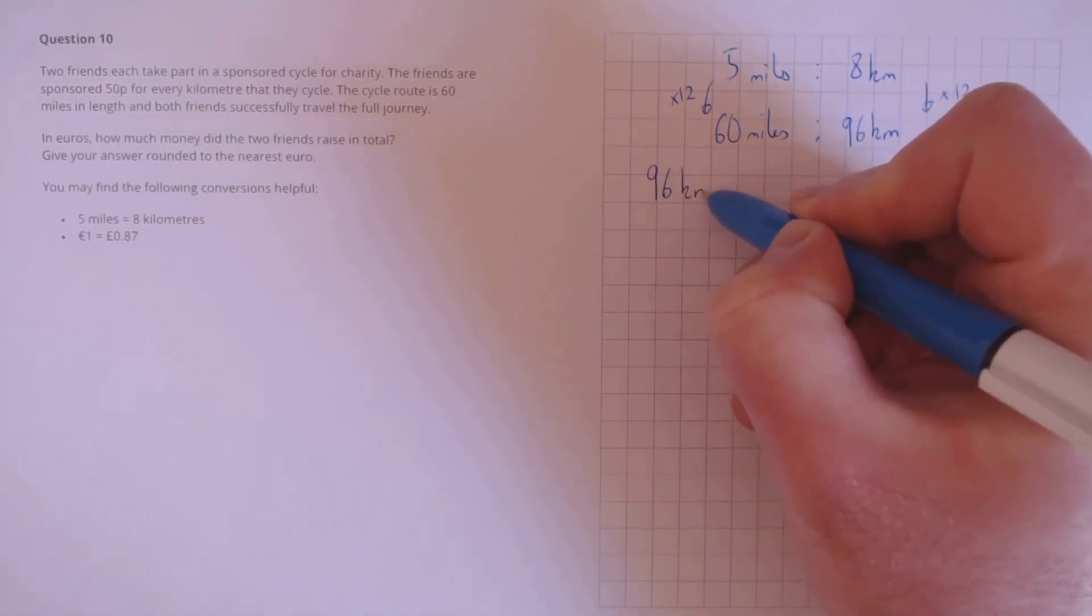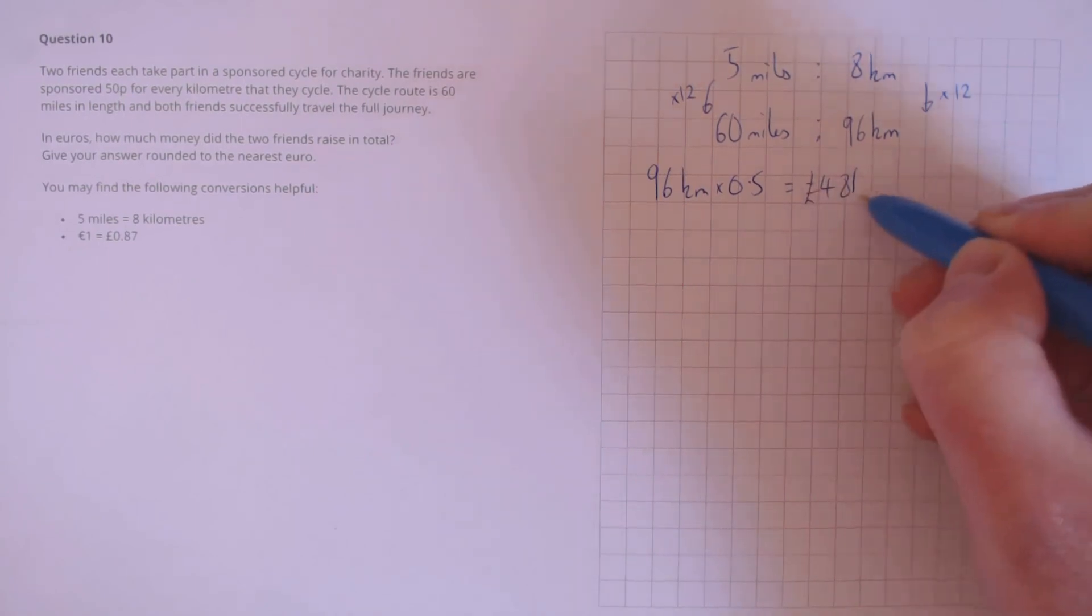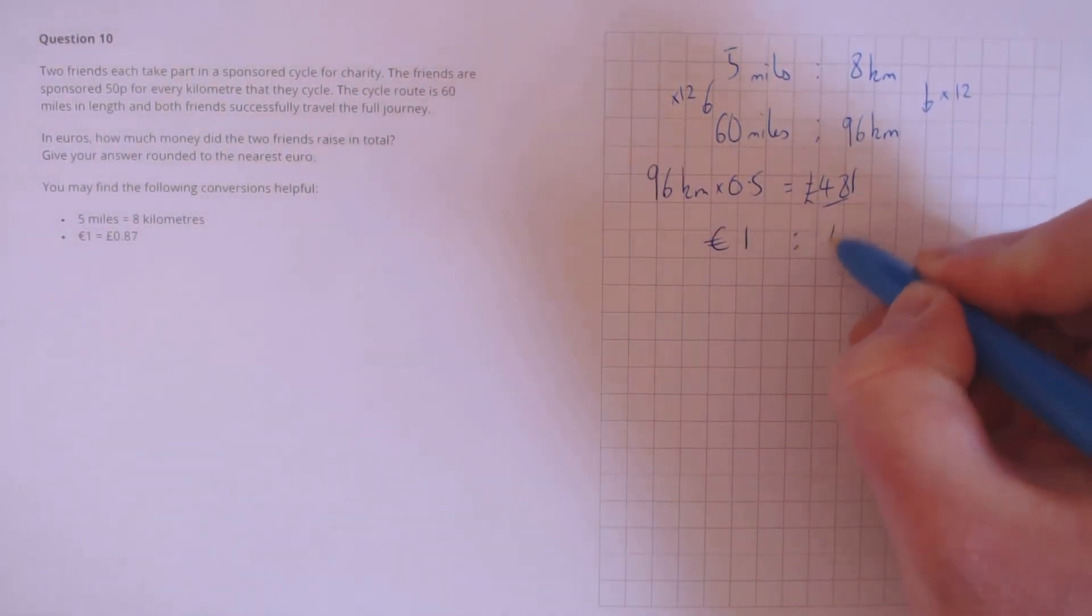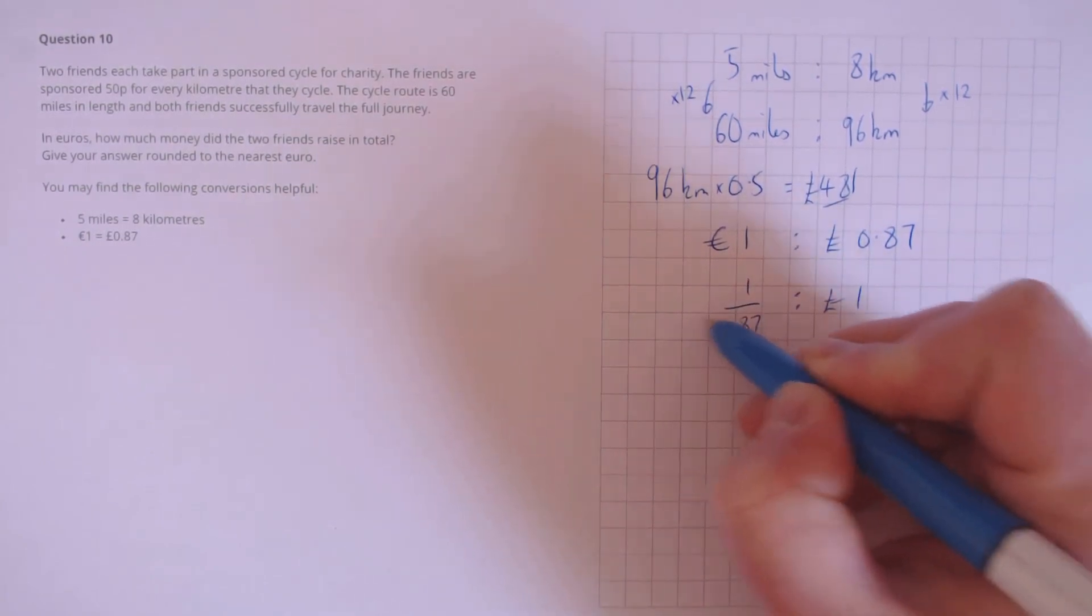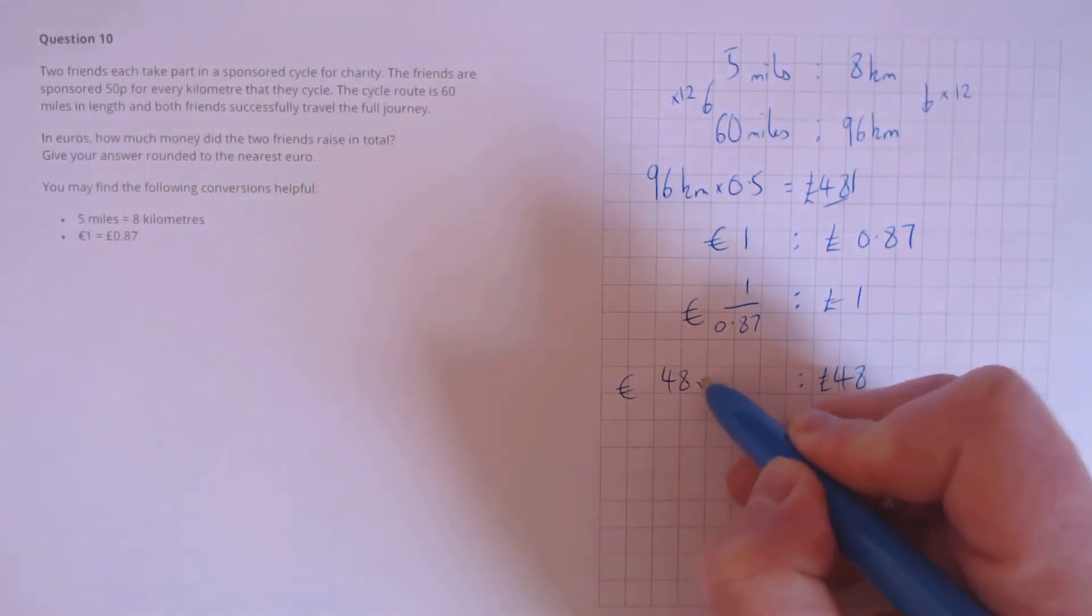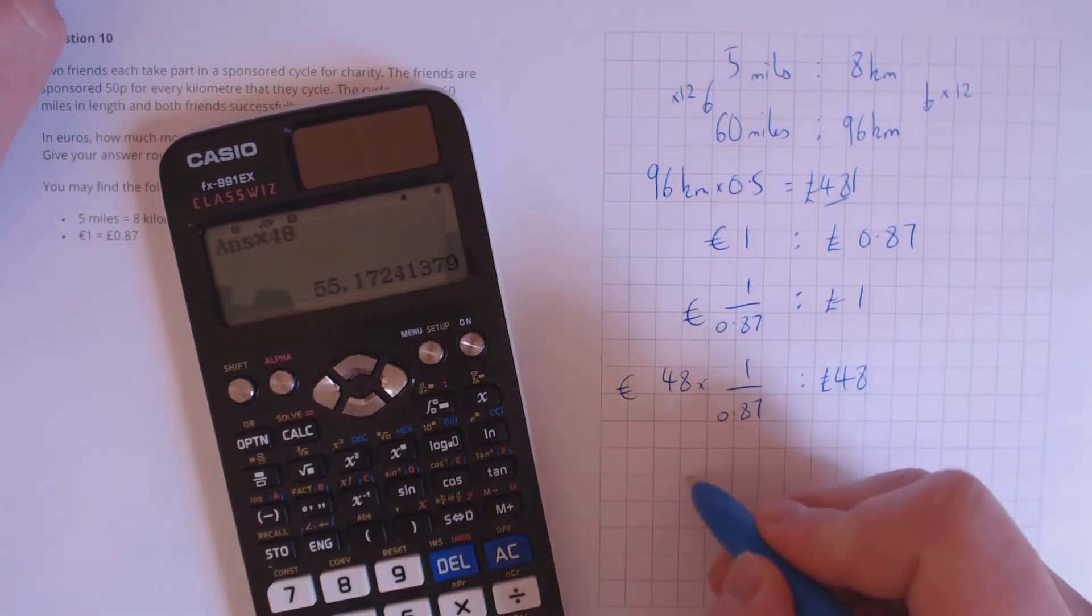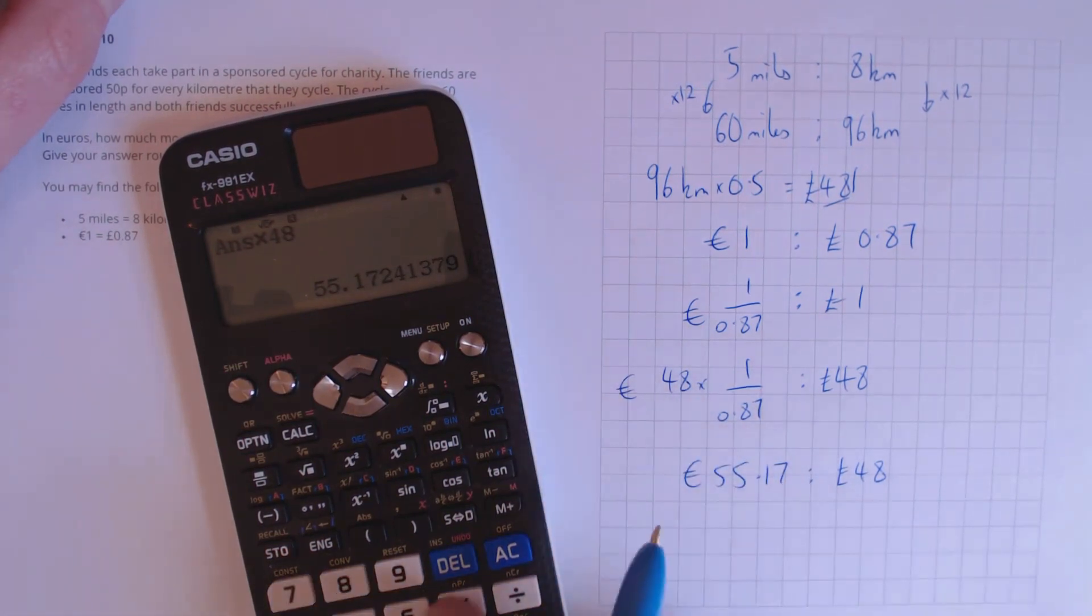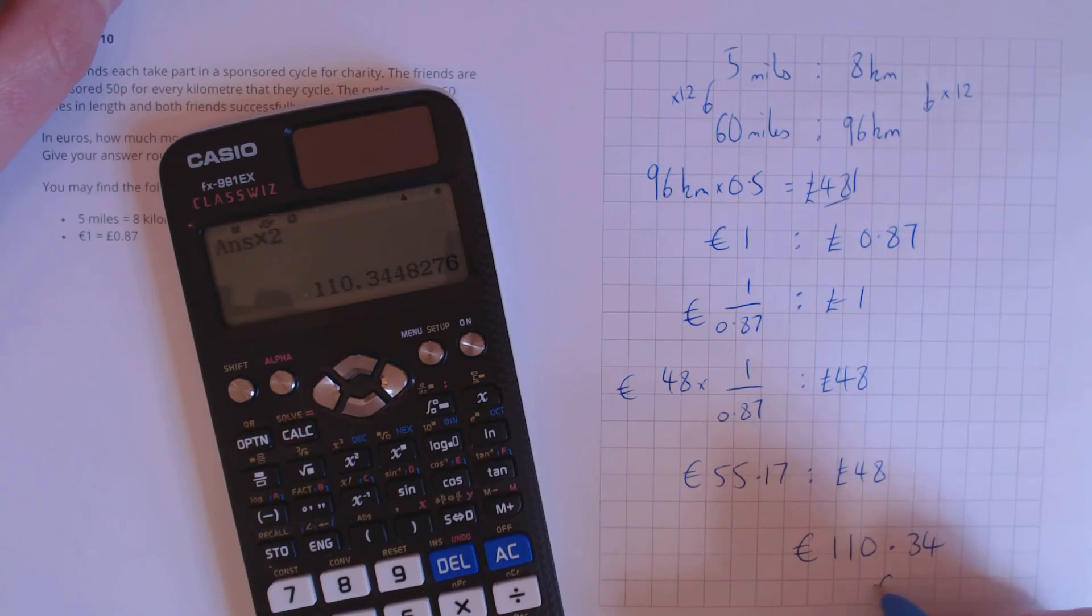One friend gets sponsored 50p or 0.5 pounds per kilometre, so that's 48 pounds in total. Now we need to use the ratio of Euros. We're given that 1 euro is equivalent to 0.87 pounds, so that means that 1 pound is equivalent to 1 over 0.87 euros. If we have 48 pounds, that's the same as 48 times 1 over 0.87 euros, which is about 55.17 euros. It's 48 pounds. We have 2 friends, so this amount needs to be doubled, which gives us 110.34 euros in total. To the nearest Euro, that's just 110 euros.